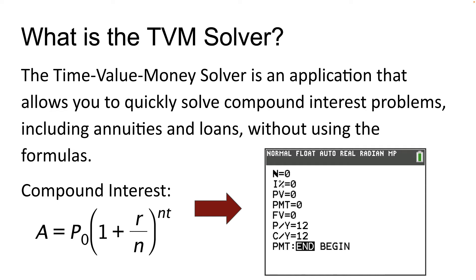When we first looked at compound interest, we learned about the formula A equals P-naught times one plus R over N raised to the NT. You can use this formula to solve all compound interest problems, but the focus of this video is to show you an easier way. The nice thing about the TVM solver is it not only allows us to solve compound interest problems, but also problems involving annuities and loans, which we'll look at in a later section.